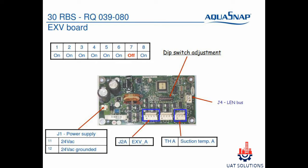EXV board DIP switch address for circuit A is shown. On section J12, 24-volt AC power is connected to power the board. On J2A, the expansion valve for circuit A is connected. On section TH, the suction temperature sensor for circuit A is connected.